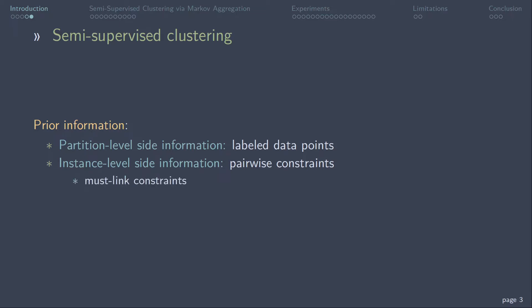Semi-supervised clustering. If available, we can use prior information to improve clustering accuracy, either in the form of partition-level side information, where we know the class label of a subset of data points, or in the form of instance-level side information, where we know if a pair of data points has the same class label, must-link constraints, or different class labels, cannot-link constraints.